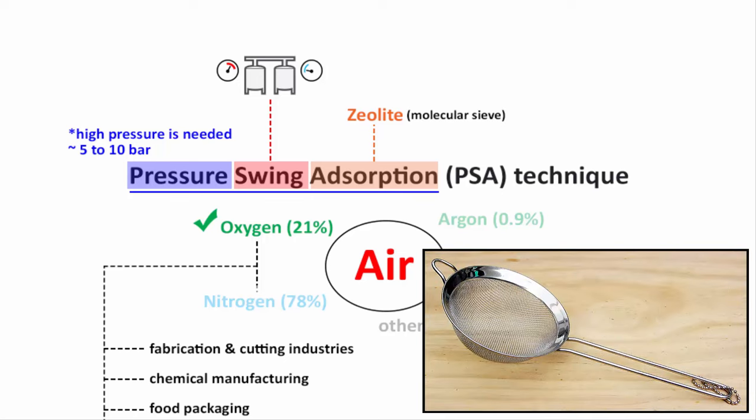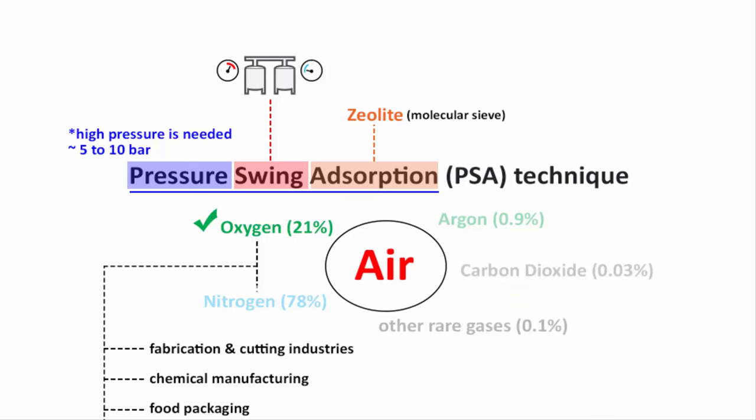That is why zeolite is also called a molecular sieve. Just like a kitchen sieve separates unwanted materials, zeolite separates materials at the molecular level.